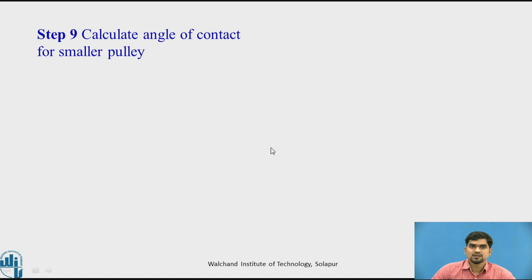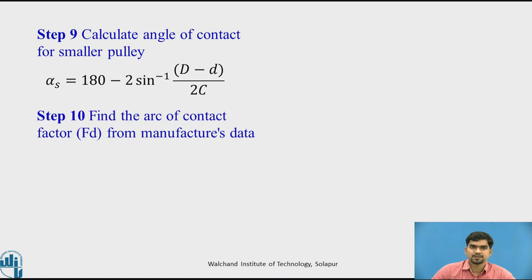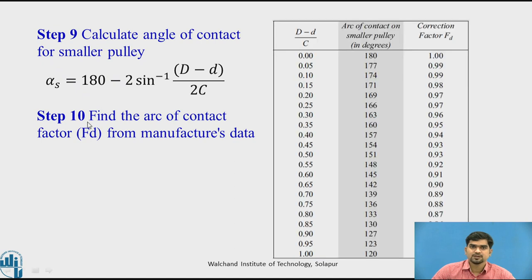Step 9: Calculate the angle of contact for the smaller pulley using the equation: α_s = 180° − 2 sin⁻¹((D − d) / 2C). This is also called the wrap angle. Step 10: Find the arc of contact factor Fd from the manufacturing data for the calculated value of α_s.